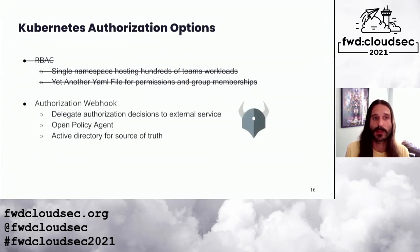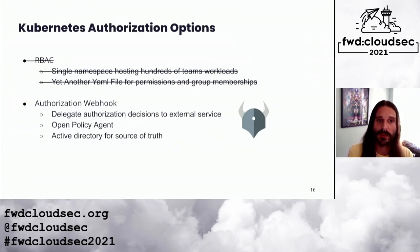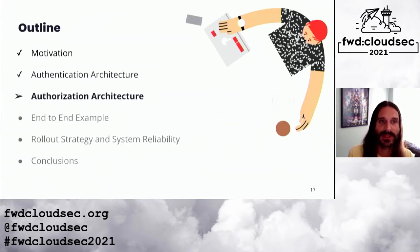Kubernetes has another option for authorization called webhook authorization, in which Kubernetes delegates authorization decisions to an external service. We could use the Open Policy Agent as this external service and programmatically produce a policy bundle that leverages Active Directory to express user and group memberships. We could do some clever things with this to achieve our requirements without having to define hundreds of overly verbose role binding configurations.